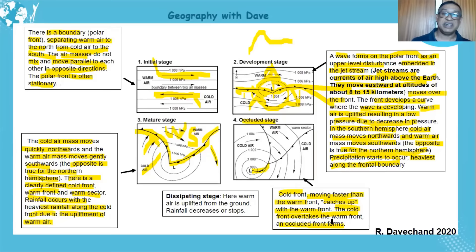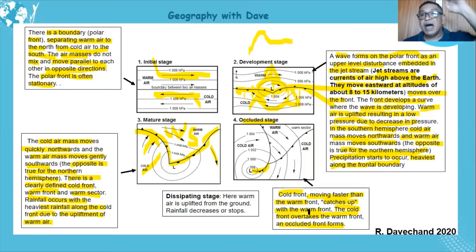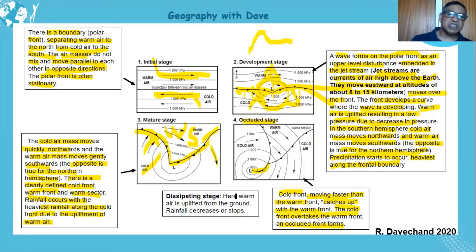The cold front overtakes the warm front, forming an occluded front. The term occlusion means the upliftment of warmer air — in all types of occlusions, the warmer air is uplifted. It's important to say 'warmer' air, not just warm, because it is warmer relative to the surrounding air.